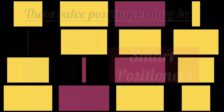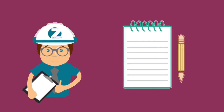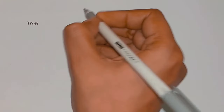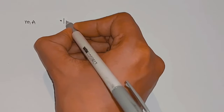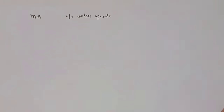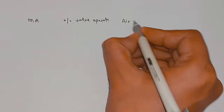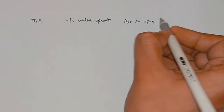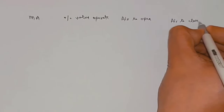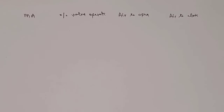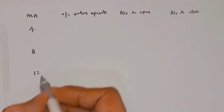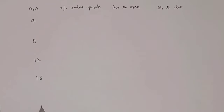Let's consider the openings of the control valves by drawing a table. In this table, we will write milliampere, air-to-open control valve, and air-to-close control valve. On the milliampere side, we will write: 4 milliampere, 8 milliampere, 12 milliampere, 16 milliampere, and 20 milliampere.